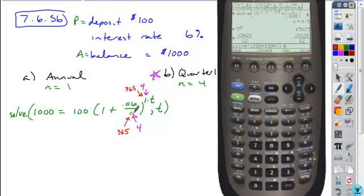So 0.06 divided by 1, which I don't actually even need, to the power of 1 times T. I don't really need to put my 1 there, but I will just to demonstrate where things are.